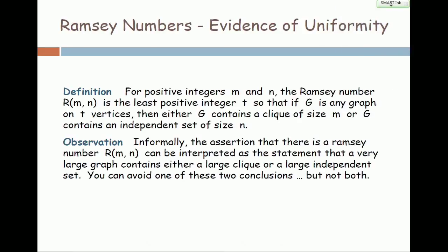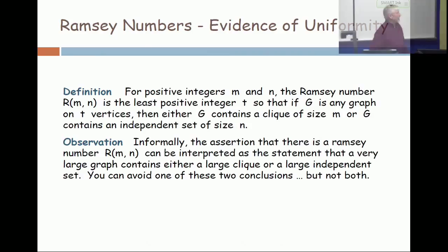The idea we're going to start with is the notion of what's called a Ramsey number. For positive integers m and n, the Ramsey number R(m,n) is the least t,